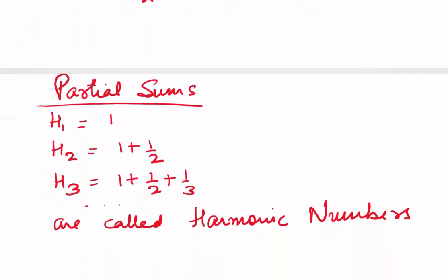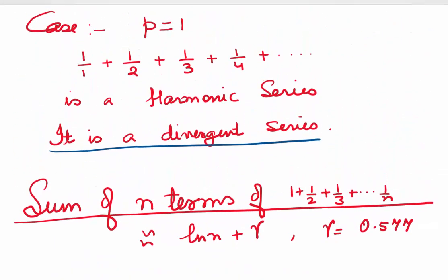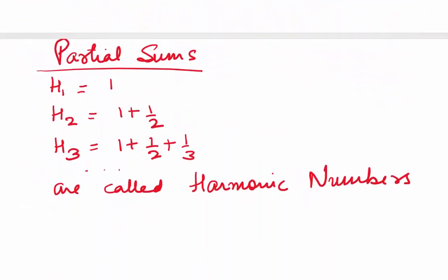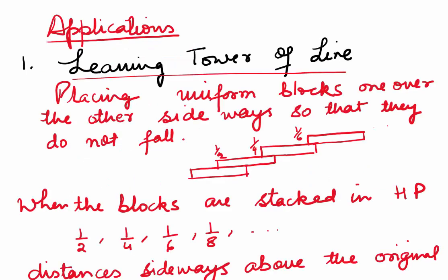The sum of n terms of the harmonic series 1 + 1/2 + 1/3 + ... + 1/n is approximately ln(n) + γ, where γ is the Euler constant ≈ 0.577. The partial sums H1, H2, H3 are called harmonic numbers. Now let's look at some applications of harmonic series.